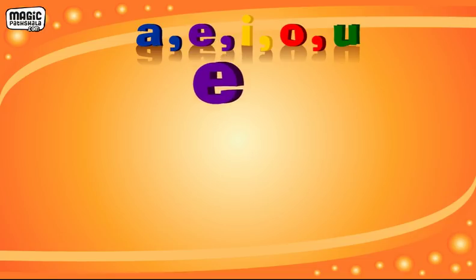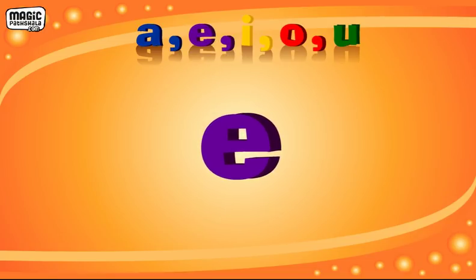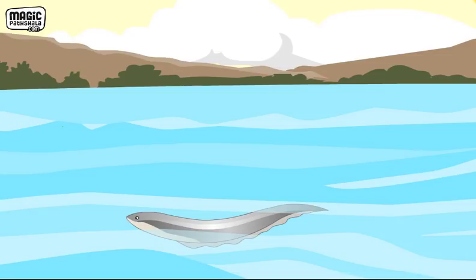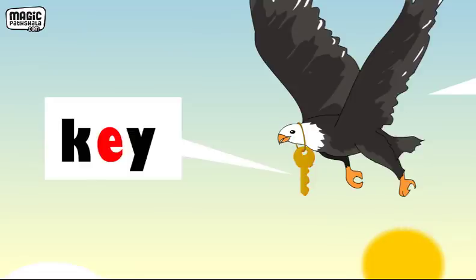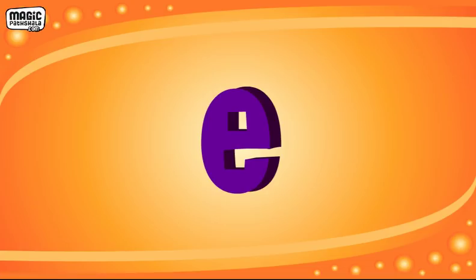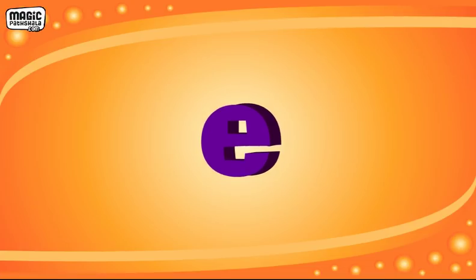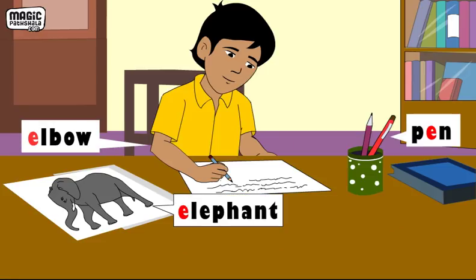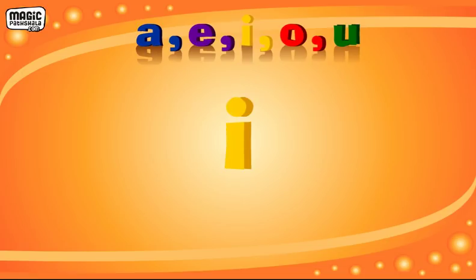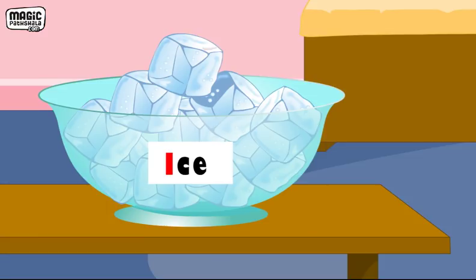Let's take the vowel E. E can be read as the long sound 'E', like in eel, eagle, and key. E can also be read as the short sound 'e', like in elbow, elephant, and pen.